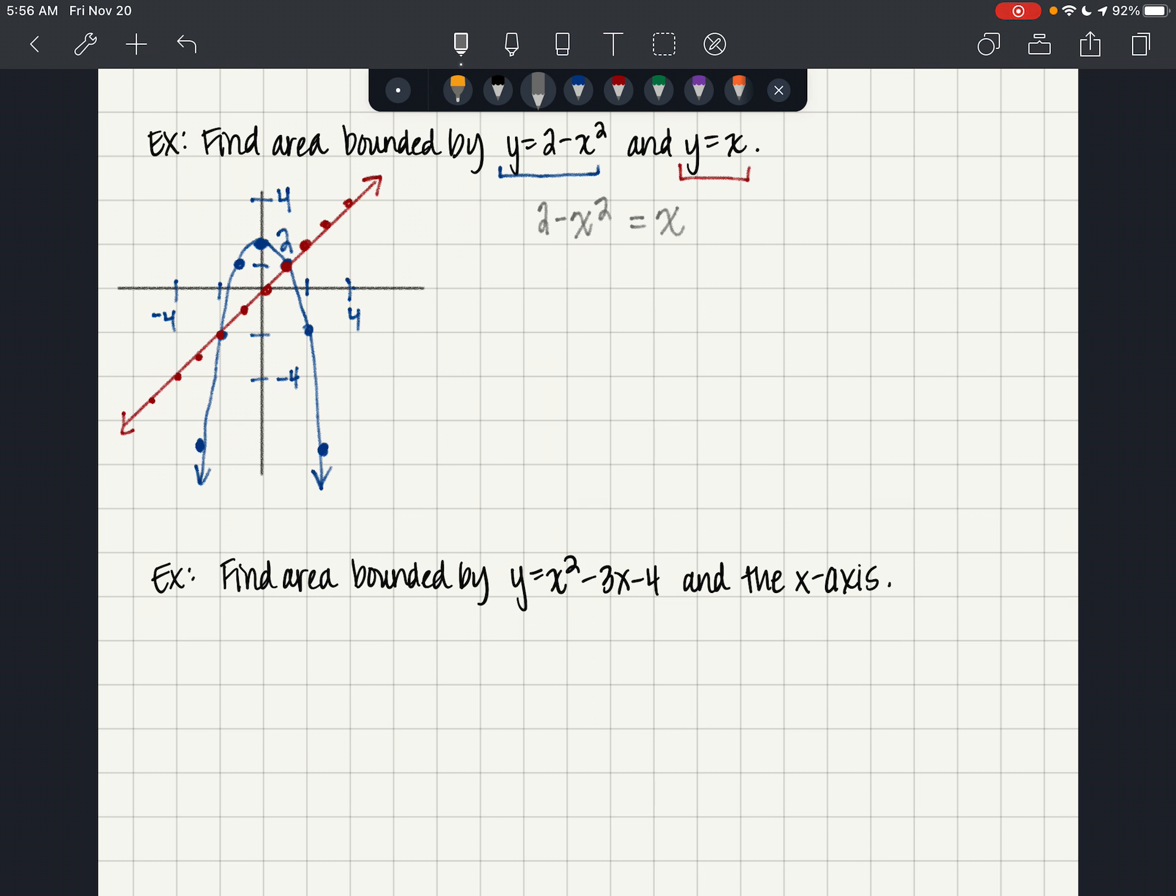We're going to set the two functions equal to each other. So 2 minus x squared equals x. We'll set this equal to 0 by getting everything over to the right. So we have x squared plus x minus 2. We're going to factor. That'll be x plus 2, x minus 1. So we have x values that are shared at x equals negative 2 and positive 1. And that's indeed what that looked like. That was a 1 and this was indeed a 2.